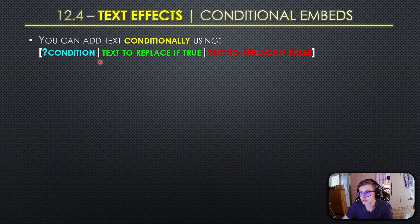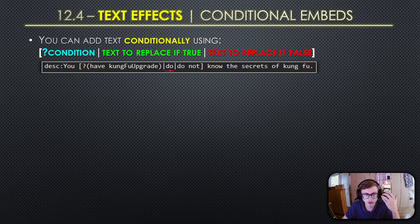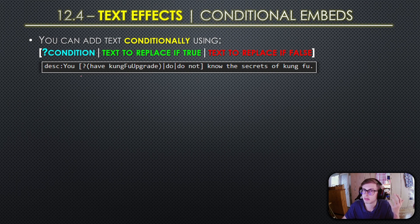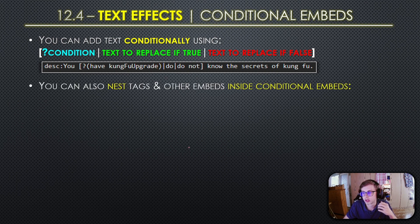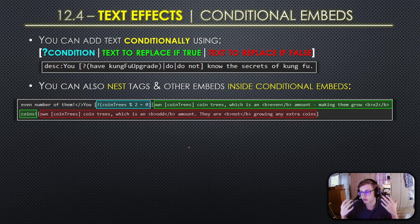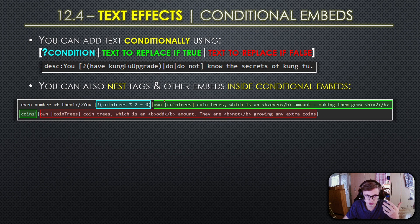The final aspect of embeds to note is conditional usage — simply set a condition at the start of an embed, then separate text for true and false values using bar symbols. This example will display 'you do know the secrets of kung fu' if you own the kung fu upgrade, otherwise it will display 'you do not know the secrets of kung fu.' It's also good practice to encase embed conditions in brackets. Inside conditional embeds you can also use other embeds to display amounts, and use tags as well.